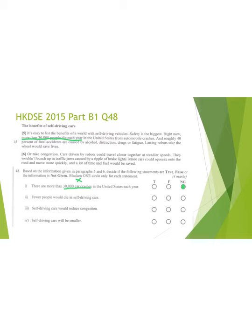Statement number two: few people would die in self-driving cars. This one should be true. As you can see in paragraph five, 'letting robots take the wheel' means self-driving vehicles would save lives, so fewer people would die — true. Statement number three: self-driving cars would reduce congestion. From paragraph six, cars driven by robots could travel closer together at steadier speeds, so they won't bunch up. Cars could squeeze onto the road and move more quickly, saving a lot of time. So it means congestion reduces — true.